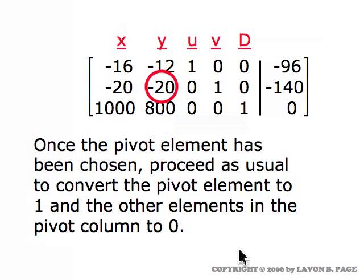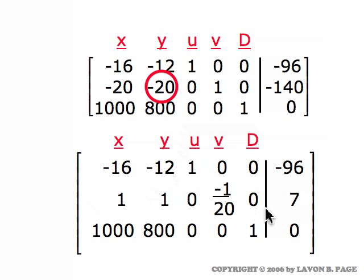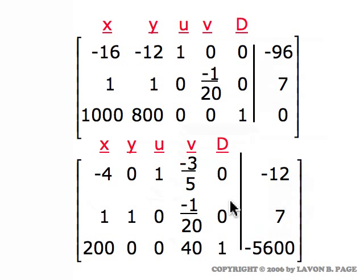Once the pivot element is chosen, the procedure is the same as before: make it a one and zero out the other entries in that column. The first row operation is minus one-twentieth times row two. Then apply row one plus twelve times row two, and row three minus eight hundred times row two, to make the minus twelve and eight hundred into zeros. The resulting tableau completes the first step.